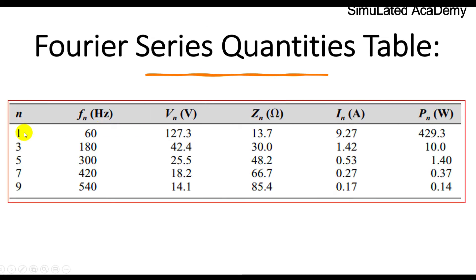n starts from 1 and it will include the odd terms: 1, 3, 5, 7 and 9. And the frequency will multiply by this because it will just contain the odd harmonics. It is equal to 60, multiplied by 60 into 3 is 180, multiplied by 60 into 5 is 300 and so on.